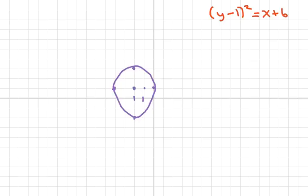So this is negative 2, 3, 4, 5, 6. And y is 1. So it's right here.